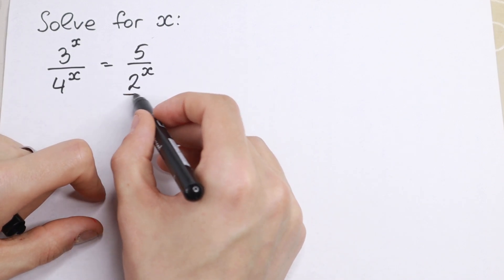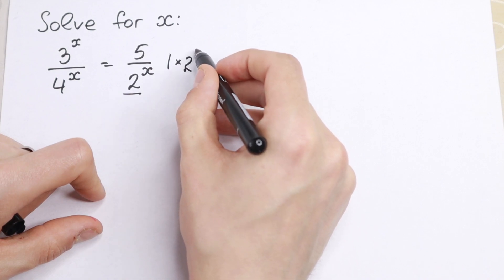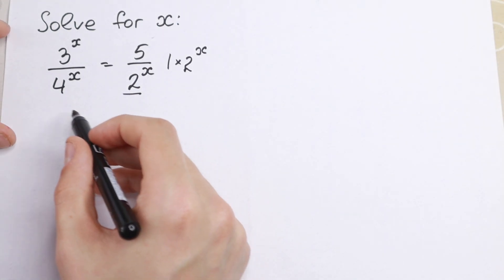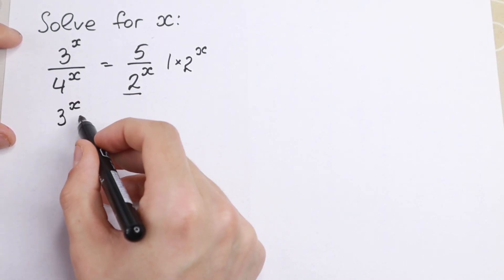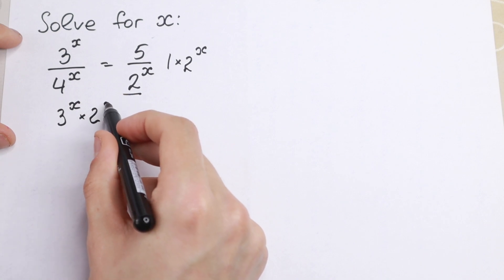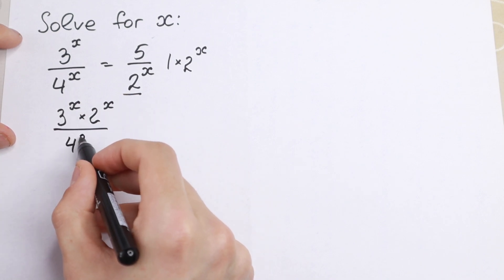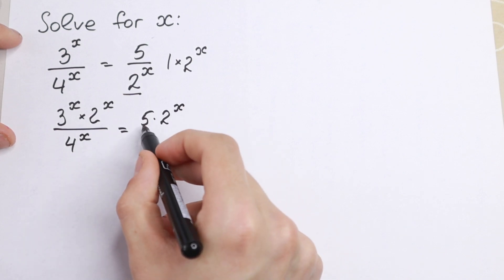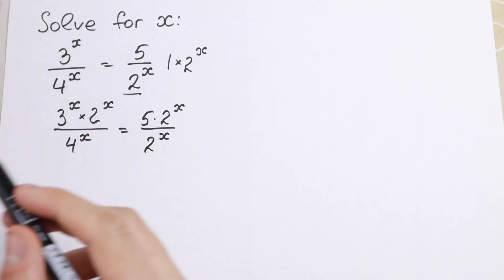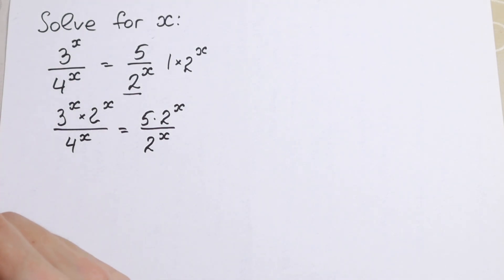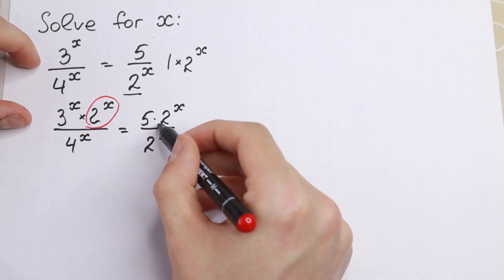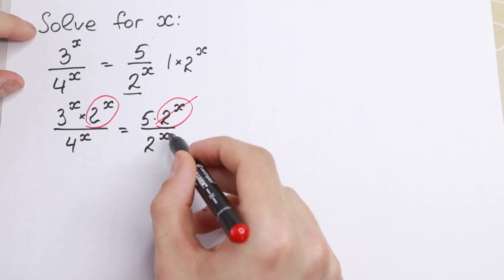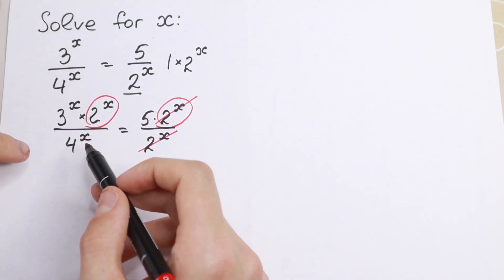Take a look right here — we have 2 to the power x. If we multiply both sides by 2 to the power x, from here we can cancel it, but on the left side we will have: 3 to the power x, times 2 to the power x, and on the bottom we will have 4 to the power x, equal to 5 times 2 to the power x. We just multiply both sides by 2 to the power x, so right here we can easily cancel this 2 to the power x.